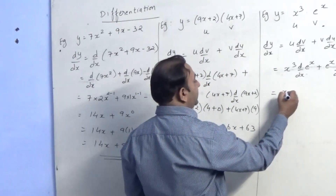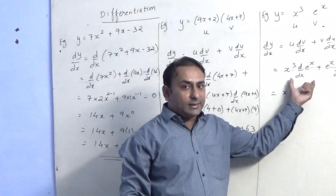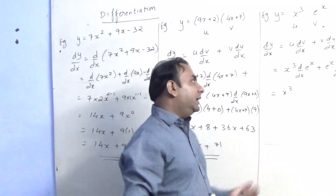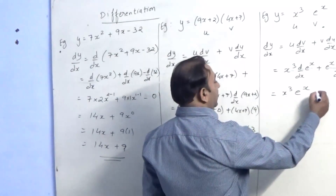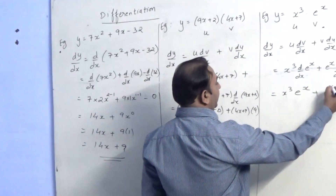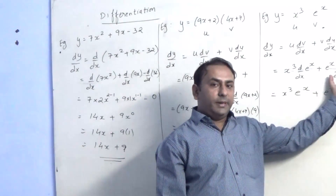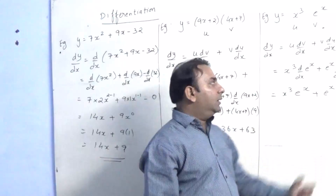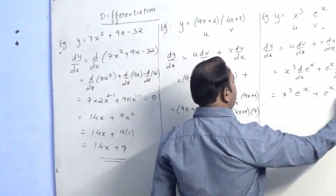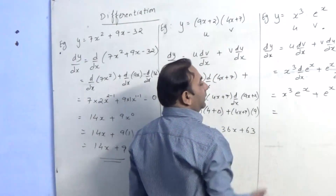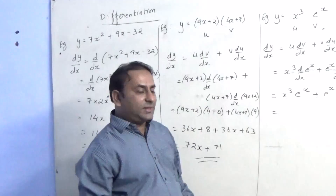So x cube will remain the same. The derivative of e raised to x, as we have seen in the formulas, remains e raised to x. Plus e raised to x remains the same, and we find the derivative of x cube. Bringing the power 3 in multiplication, the derivative of x cube is 3x square. So we get x cube times e raised to x plus e raised to x times 3x square.